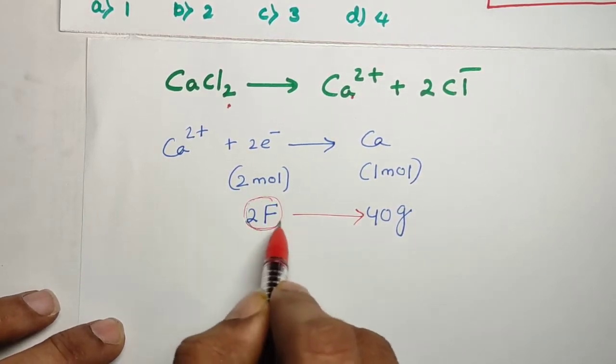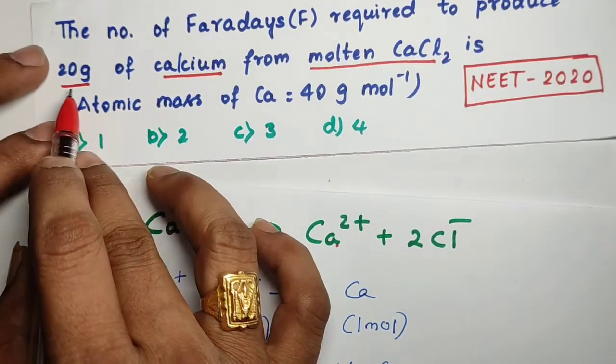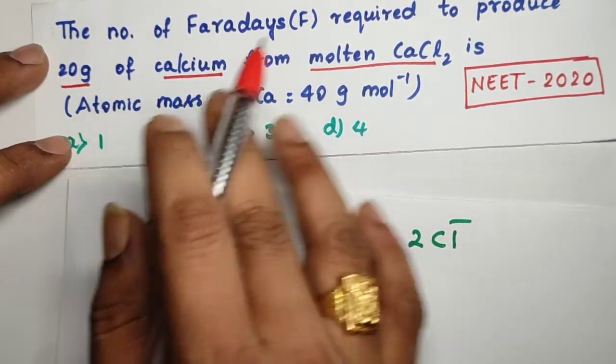For 40 grams we need how many Faraday? Two Faraday. In this question, how many grams they need? 20 grams, right? 20 grams.